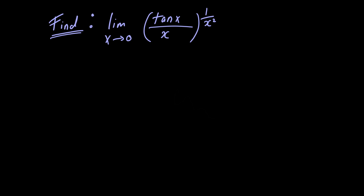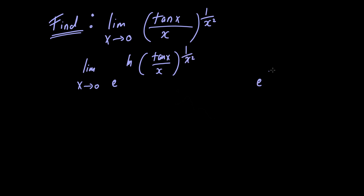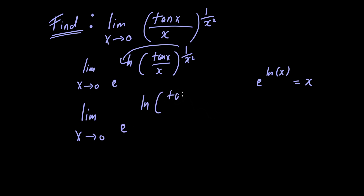Let's begin by rewriting this limit in the following form: the limit as x approaches 0 of e raised to the natural logarithm of tangent of x divided by x, all raised to 1 over x squared. We haven't changed the expression. Now we can use the power rule for natural logarithms and bring the exponent down to the front, giving us the limit as x approaches 0 of e raised to the natural logarithm of tangent of x divided by x, all divided by x squared.